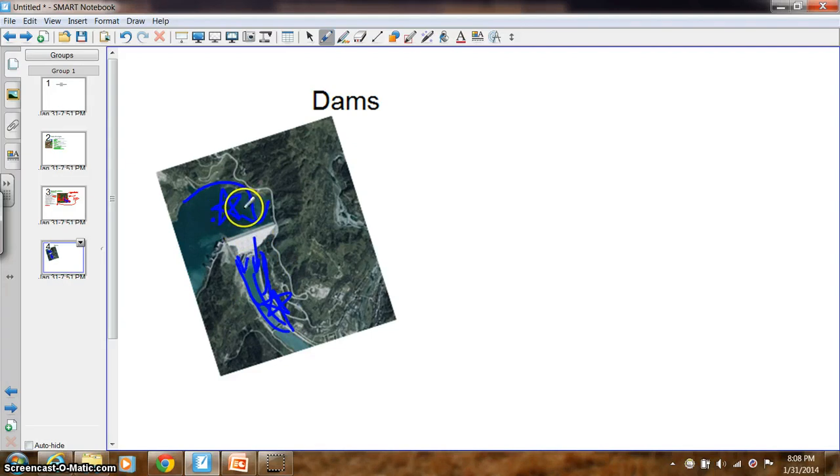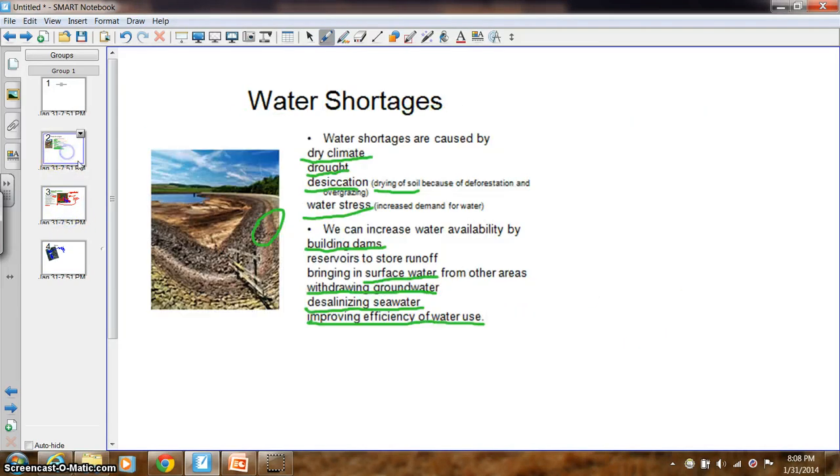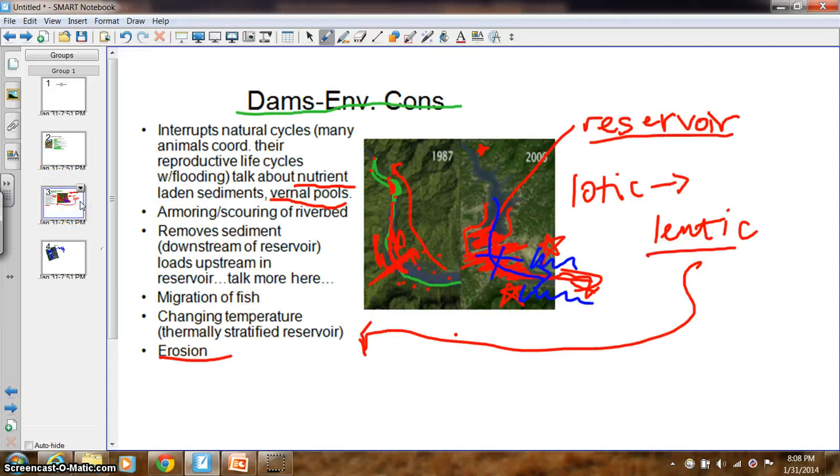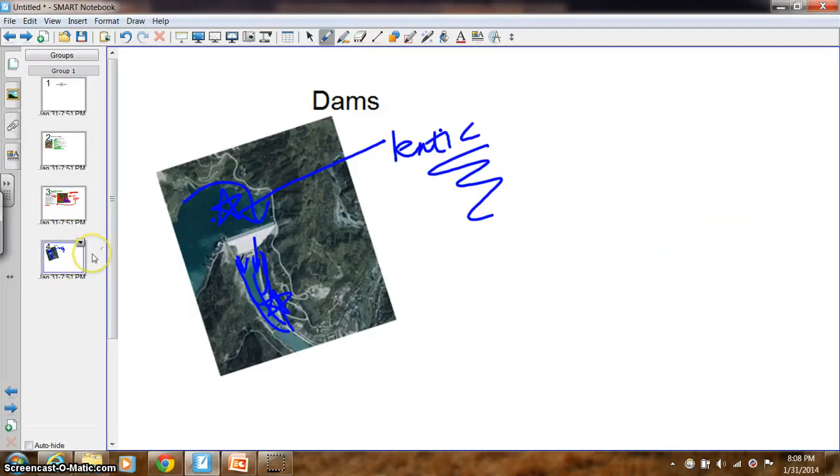Again, some dynamics about the reservoir is that it becomes a lentic environment with all of the abiotic factors associated with that regarding water quality. We talked in the previous slide about the biomass that is now flooded underneath in the reservoir. That's basically a high BOD. That's going to increase the BOD, which will decrease the DO because the aerobic bacteria will be decomposing all of those trees, grass, and other plant matter.